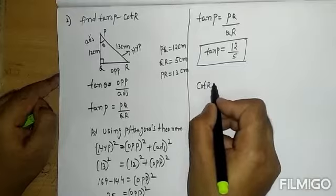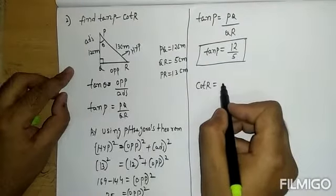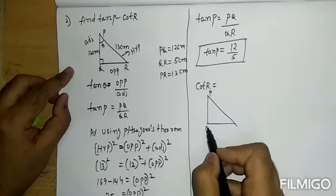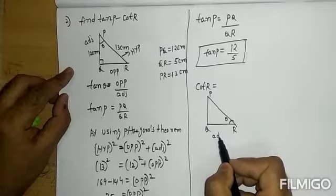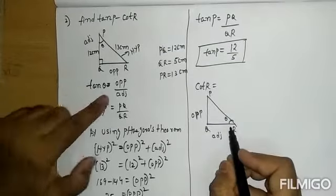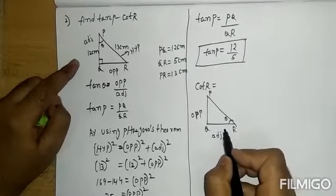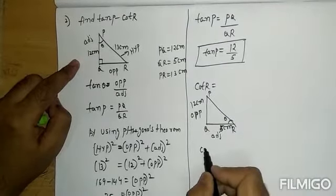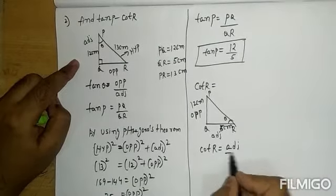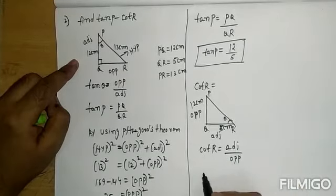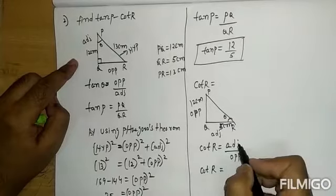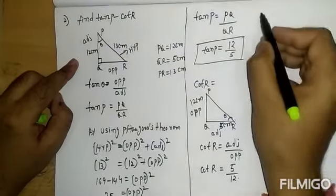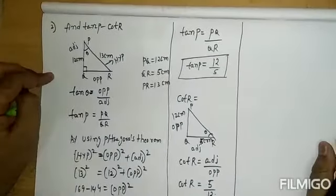Now for cot R, the theta shifts to angle R. This becomes the adjacent side and this becomes the opposite side. The values are 25 centimeters and 12 centimeters. Cot R equals adjacent by opposite, so cot R equals 5 by 12.